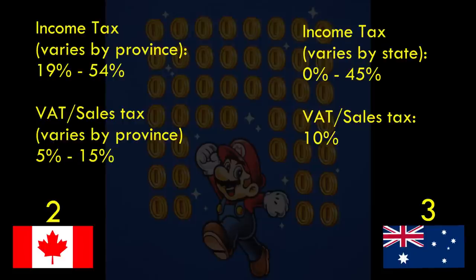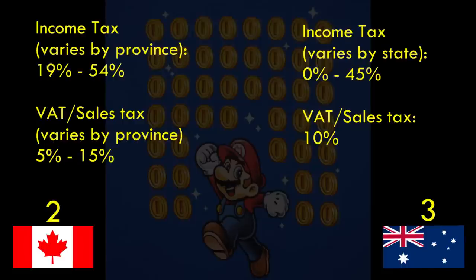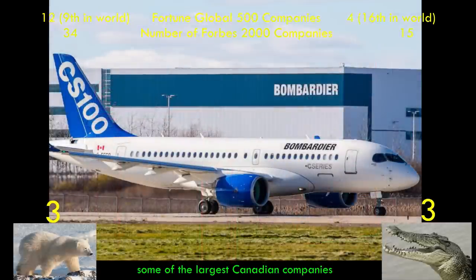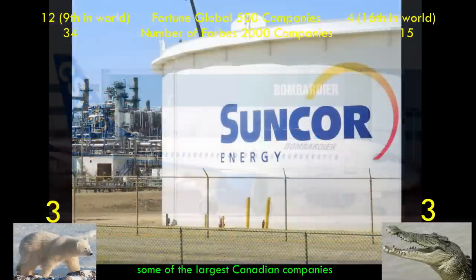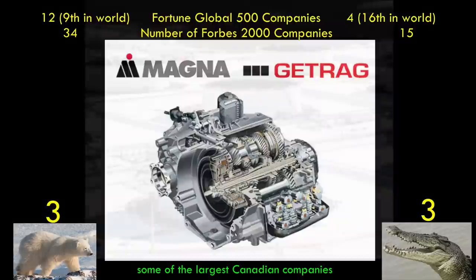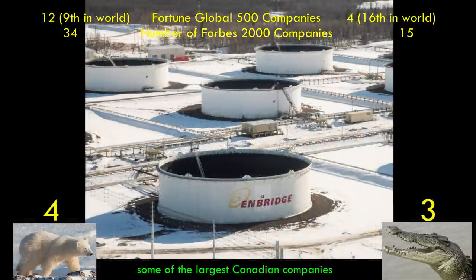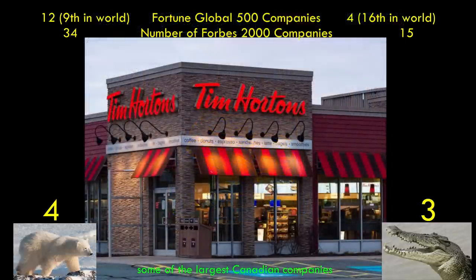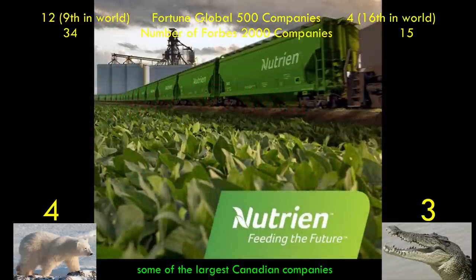So Australia gets off to a quick three to two start after the first few economic categories. Canada has a larger number of Fortune Global 500 companies — twelve located there, ranking ninth in the world — versus only four in Australia, which ranks sixteenth. On the Forbes 2000, Canada also wins with 34 companies, the largest being the Royal Bank of Canada, and Australia has 15, the largest being BHP Mining Group. Using either metric, Canada has more than twice as many major companies headquartered there than Australia, even though its population is only one and a half times as large.